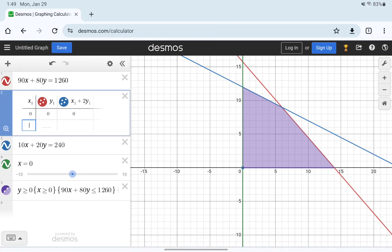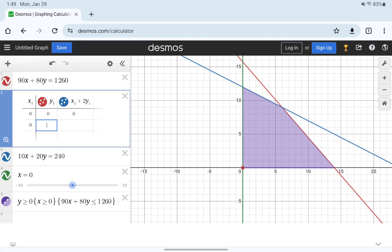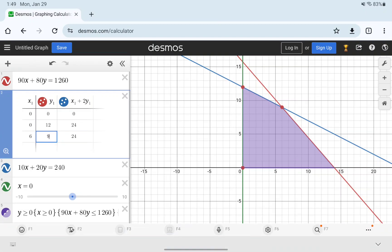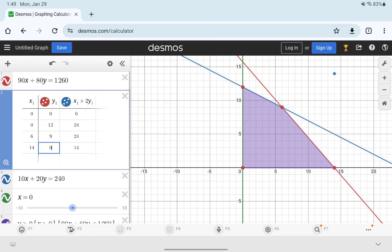And then we input our corner points, 0, 0, 0, 12, 6, 9, and 14, 0.